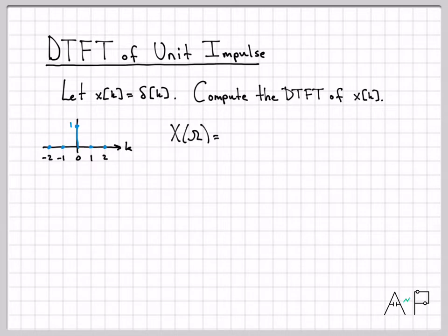What we want to compute is x of capital omega. That's the notation we introduced in the last video. This means the DTFT of x of k. Capital omega is our frequency variable, and the units of that are in radians per sample. So let's just go ahead and write down, first of all, the definition of the DTFT.